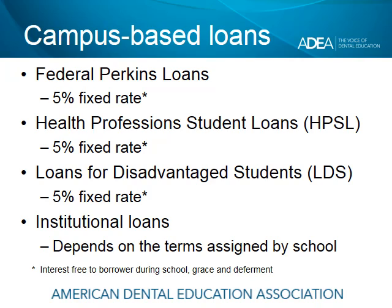Some schools have what we call campus-based loans — awarded through the school, where it looks like the school is the lender, and in the case of some institutional loans, the school actually is the lender. Examples include Perkins loans, health profession student loans, loans for disadvantaged students, and some schools have their own institutional loan funds. The interest rate on Perkins, health professions, and loans for disadvantaged students is five percent fixed. These loans are also interest-free to borrowers during school, grace periods, and any periods of deferment. Be sure to check with your school to see if campus-based loans are available to you.